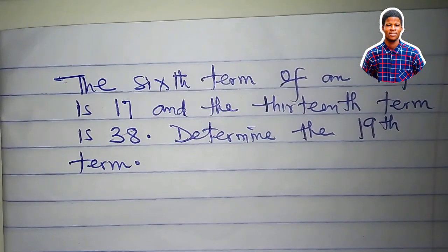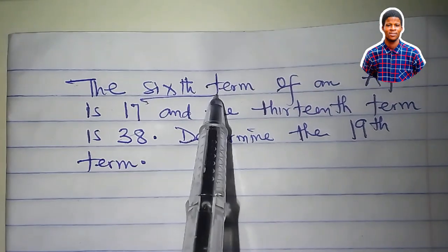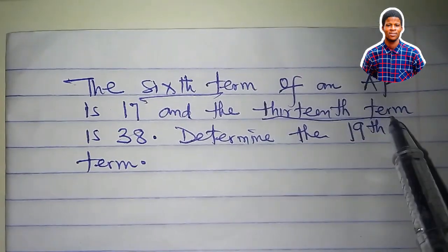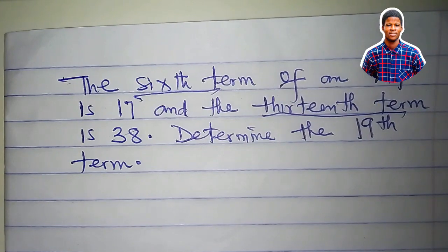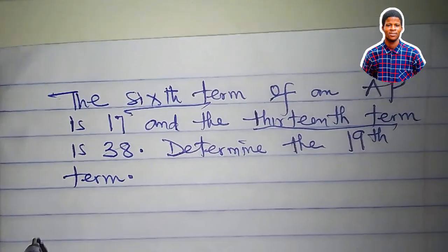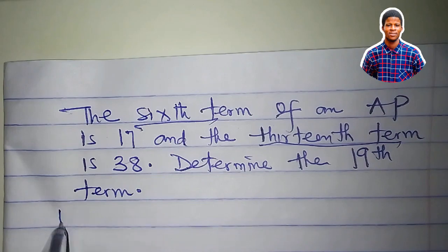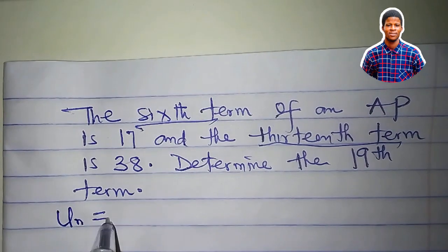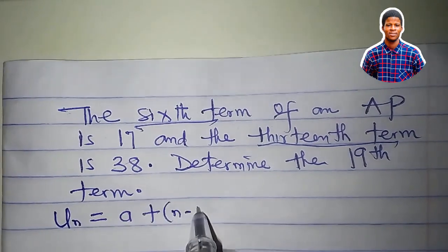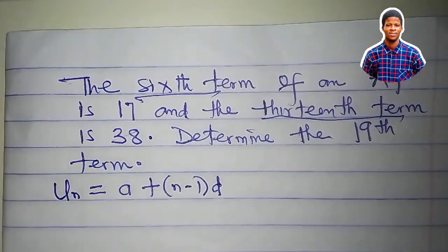Now they gave us the sixth term and the 13th term, that's all we are given. So remember the nth term formula for a sequence. U sub n is equal to A plus n minus 1 times the common difference.